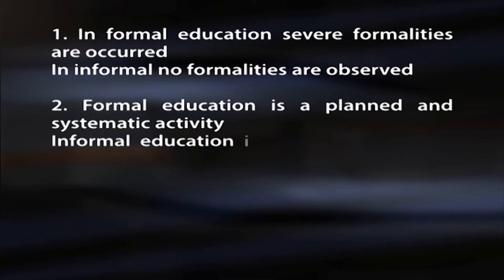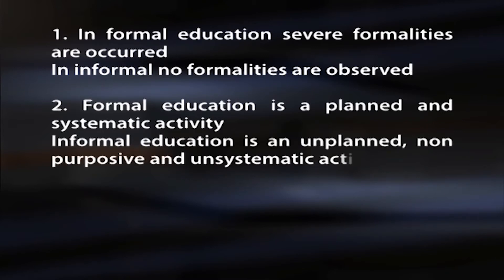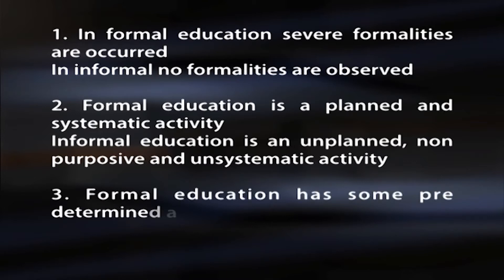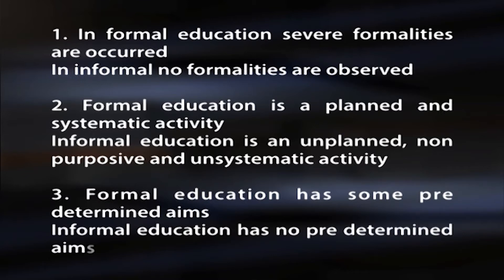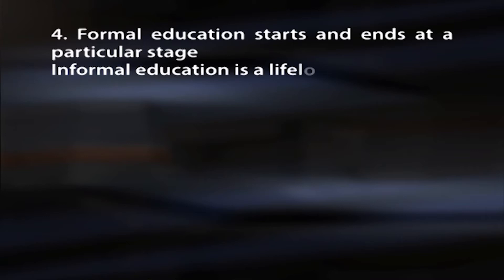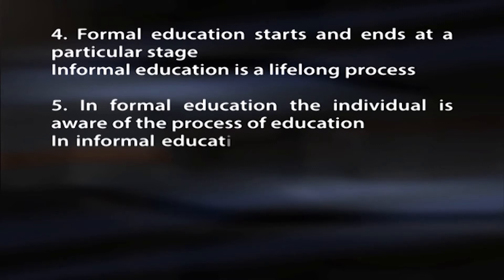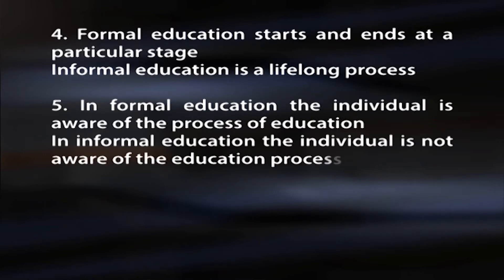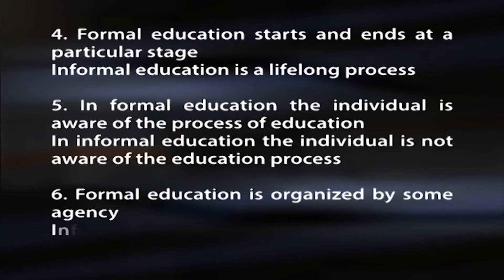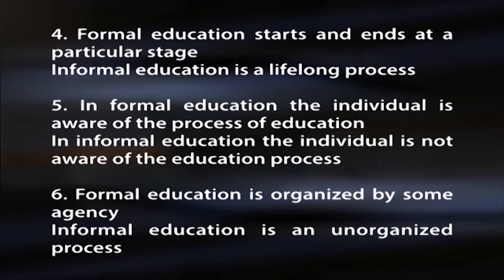The distinctions between formal and informal education are as follows. In formal education, severe formalities are observed; in informal education, no formalities are observed. Formal education is a planned and systematic activity, whereas informal education is unplanned, non-purposive and unsystematic. Formal education has predetermined aims but informal education has no pre-determined aims. Formal education starts and ends at a particular stage but informal education is a lifelong process. In formal education the individual is aware of the education process, whereas in informal education the individual is not. Formal education is organized by some agency, whereas informal education is an unorganized process.